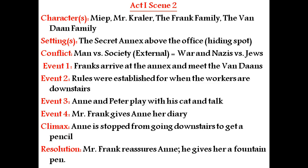Event one: Mr. Frank arrives at the annex and meets the Van Daan family. Event two: rules were established for when the workers are present downstairs, because it was a secret place. Event three: Anne and Peter play with his cat and talk — Peter is the Van Daan's son — and they started building their relationship. Event four: Mr. Frank gives Anne her diary.